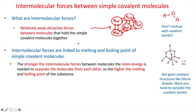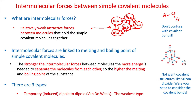One thing to be careful of - we are not talking about giant covalent structures. The classic one is silicon oxide; to melt silicon oxide you have to break the covalent bonds between each of the atoms because it is a giant structure, not simple molecules. There are three types of intermolecular force: the weakest is a temporary induced dipole-to-dipole force, which we also call van der Waals. The next is permanent dipole-to-dipole, and the strongest is hydrogen bonds.